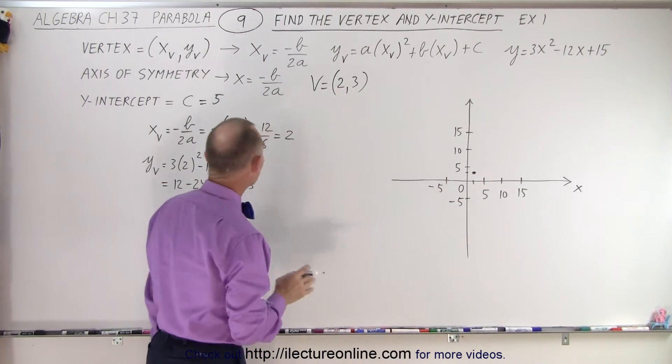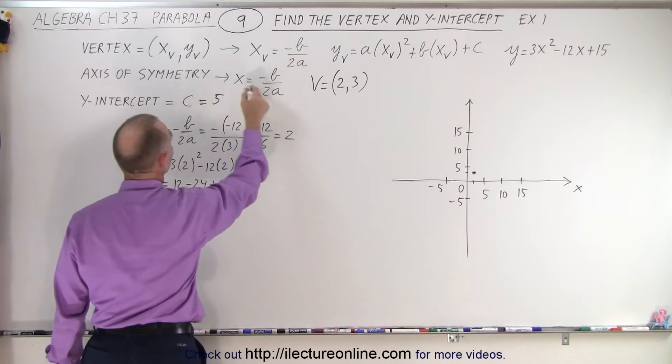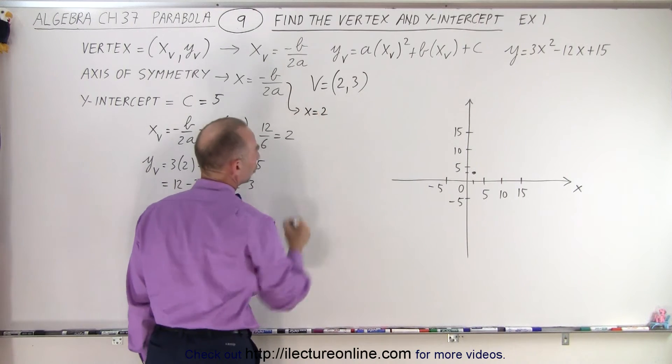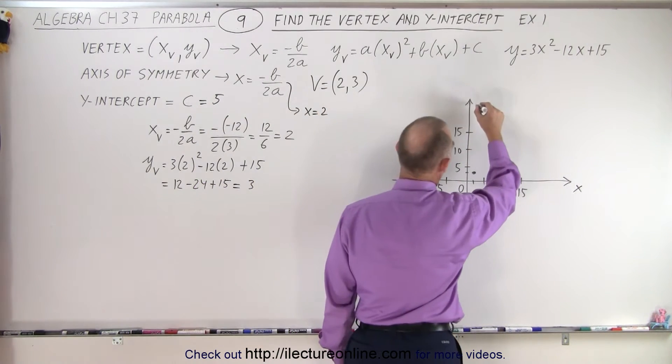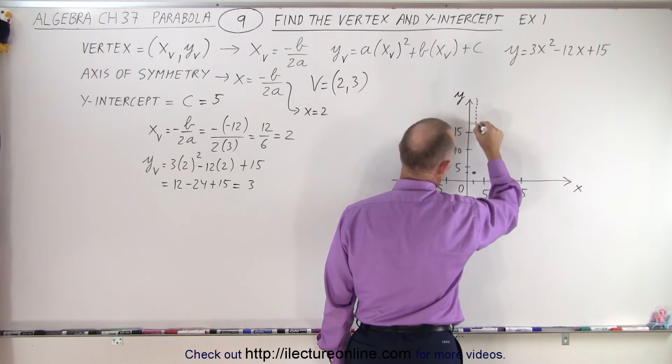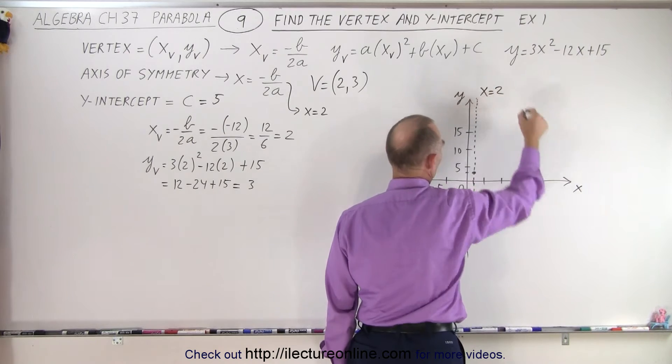Now we can also draw the axis of symmetry. The axis of symmetry is where x = 2, so we can draw a vertical line parallel to the y-axis. There is the line where x = 2.